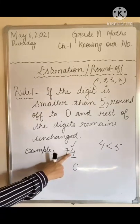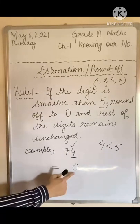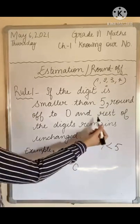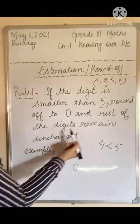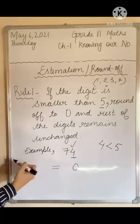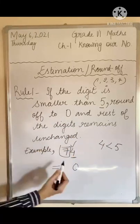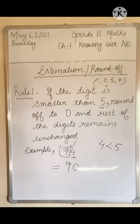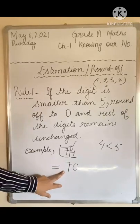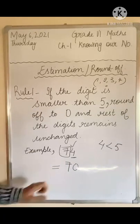Instead of 4 in the answer, I have written 0 over here. And the rest of the digits remain unchanged - the 7 remains unchanged. So what is the answer of rounding off 74? It's 70.